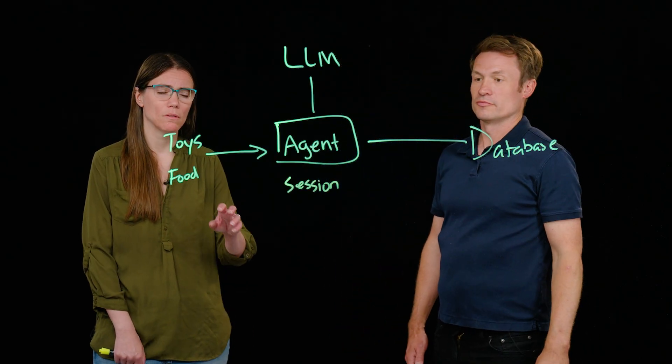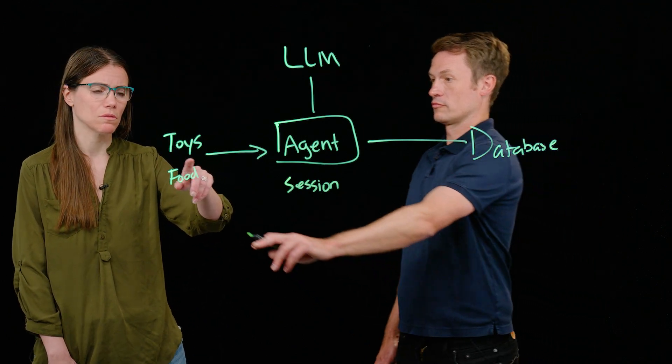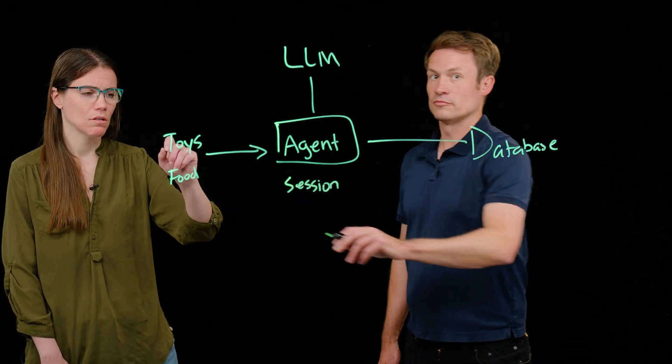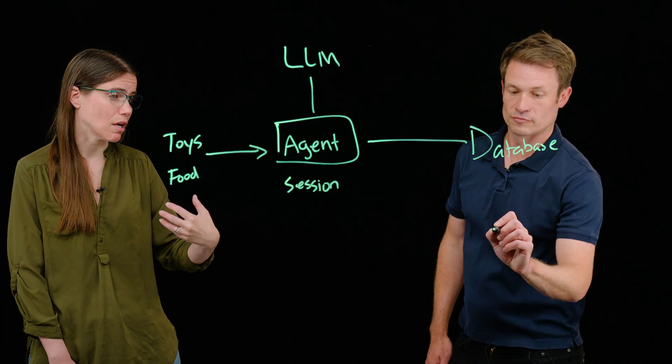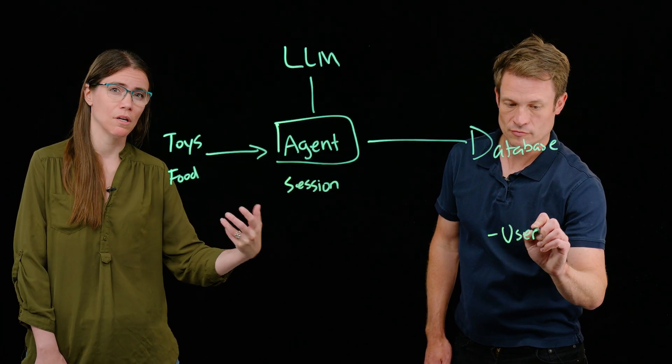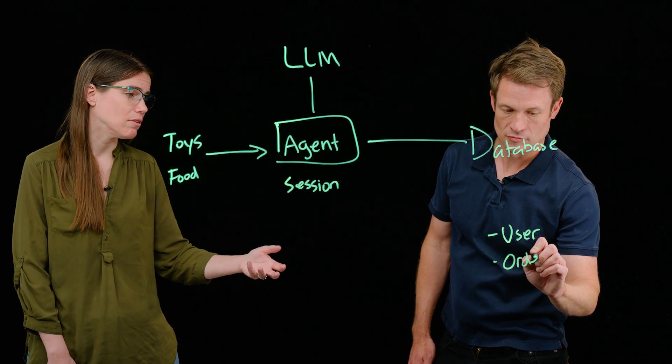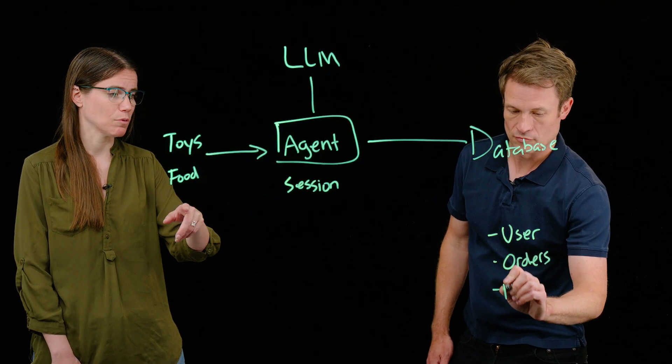Okay. But in this example, the LLM is only aware of my intent and my current question, not the fact that I actually have two cats because I have an older cat or that I've ordered from this pet store before because I have, or that I have certain preferences about cat food and I may have already provided those. So how do we get that information into the agent?